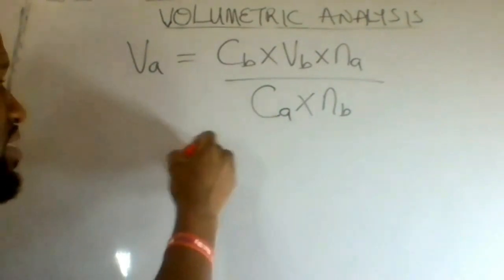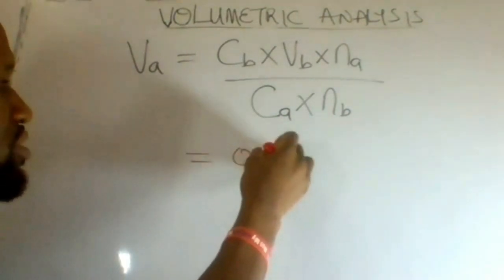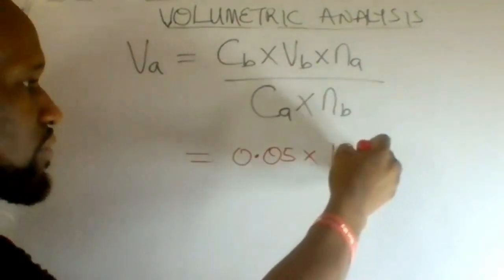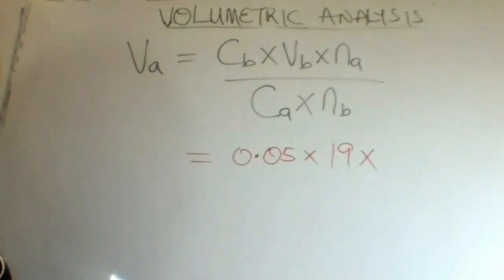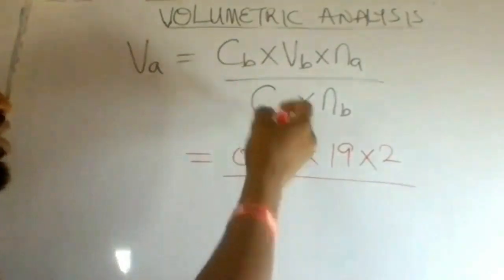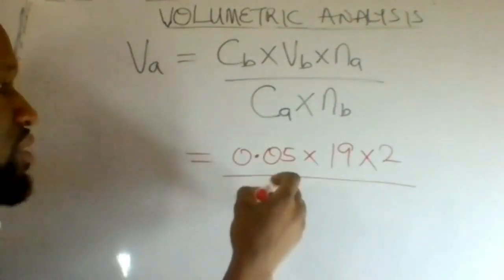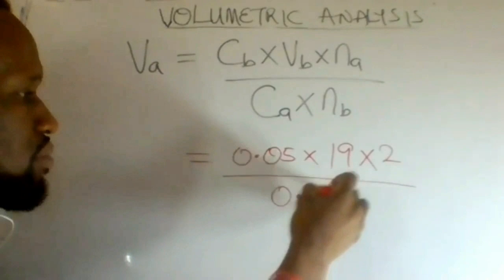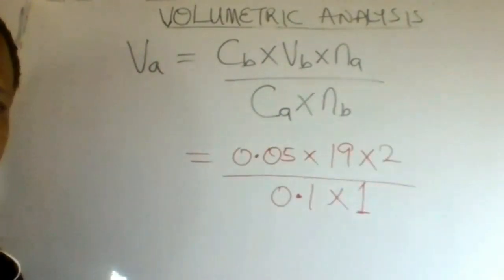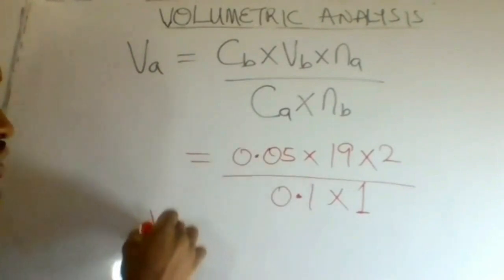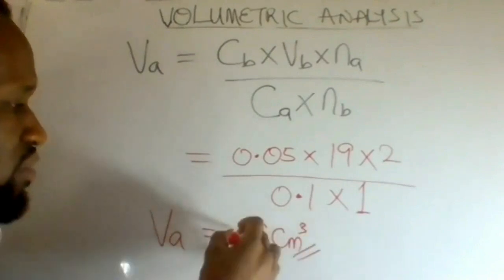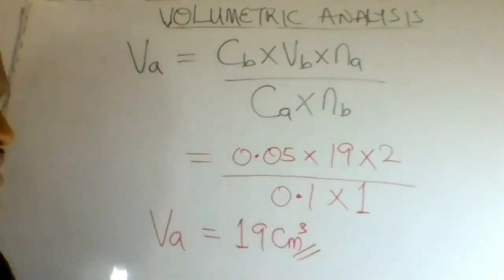Substituting: concentration of base is 0.05, multiplied by volume of base 19, times number of moles of acid which is 2, divided by concentration of acid 0.1, multiplied by number of moles of base which is 1. The answer for volume of acid is 19 cm³.